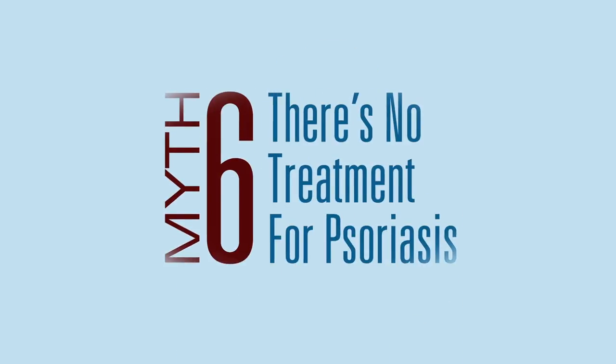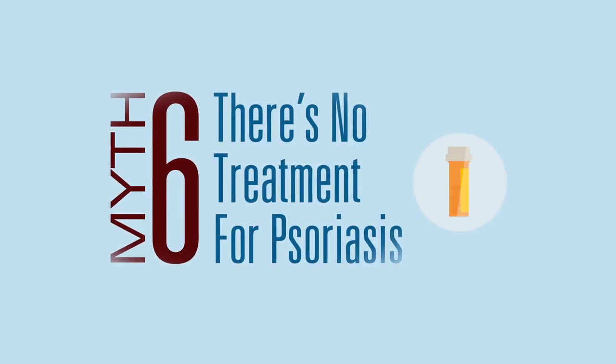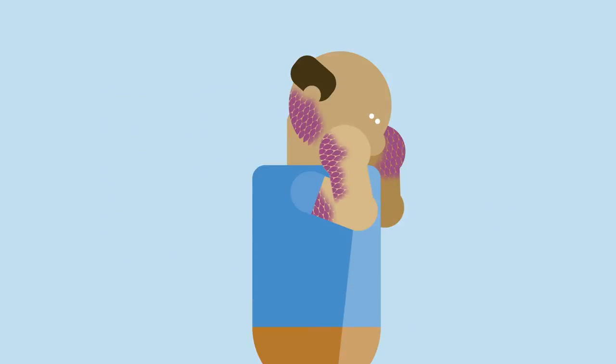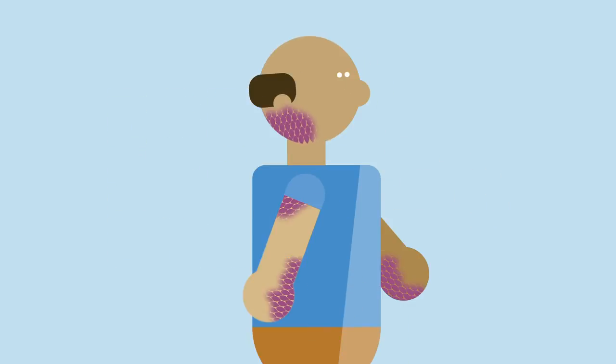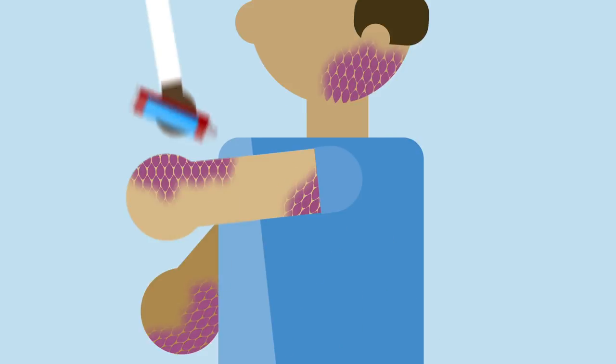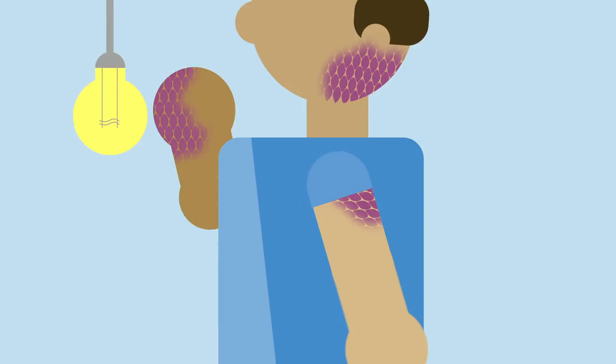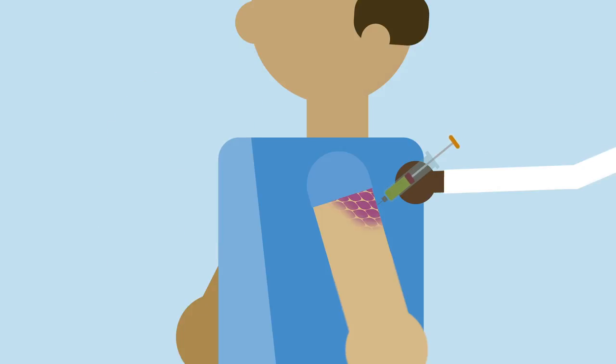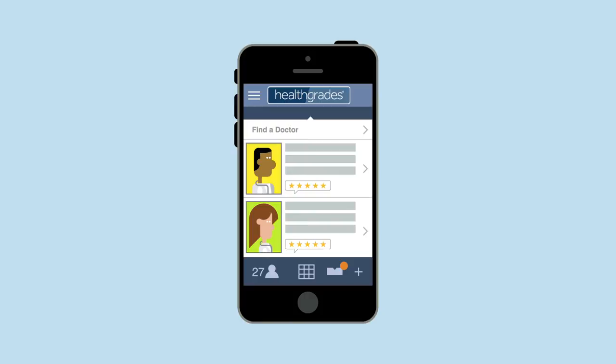Since there's no cure for psoriasis, many people believe that treatment doesn't work either. But that's not true. There are a wide variety of options to treat psoriasis, including topical treatments applied to the skin, light treatment called phototherapy, and medicines you take orally or by injection. If you're not currently treating your psoriasis, it's not too late to start, and it's easy to find the right doctor to help you at Healthgrades.